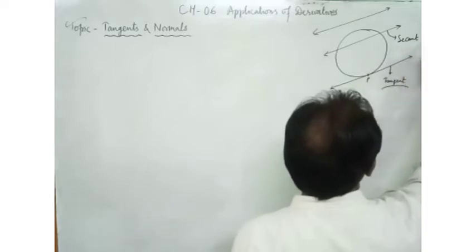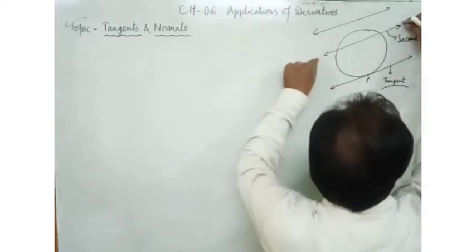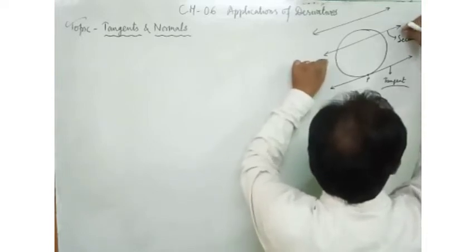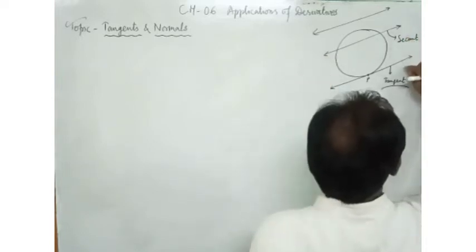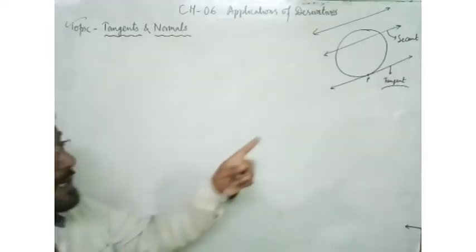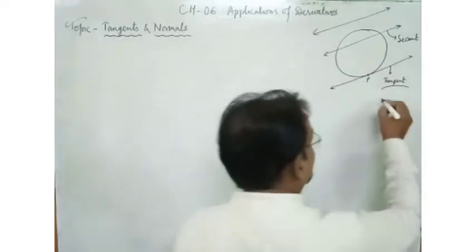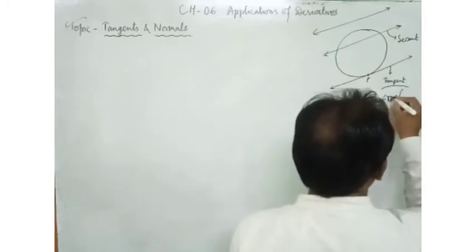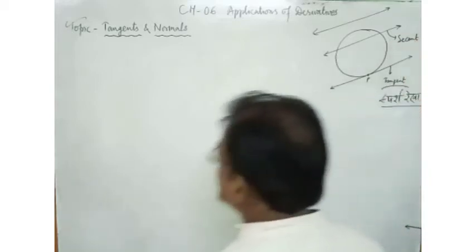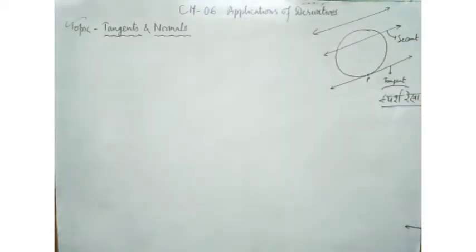Secant को हिंदी में 'प्रतिच्छेदी रेखा' कहते हैं। अब यही secant — मान लीजिए मैं इसे यहाँ से सरकाना शुरू करूँ — सरकाते-सरकाते एक स्थिति आएगी कि वो circle के बाहर निकलते समय, circle को एक point पर touch करेगी। तो touch करने वाली line tangent कहलाएगी; हिंदी में इसको 'स्पर्श रेखा' कहते हैं। Circle की case में tangent आपने अच्छे से सीखा और समझा हुआ है।